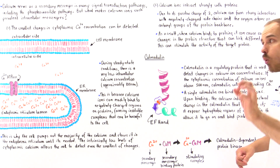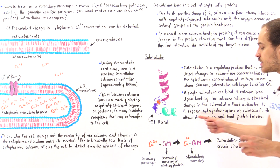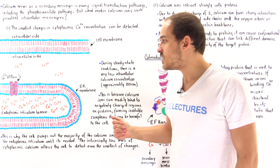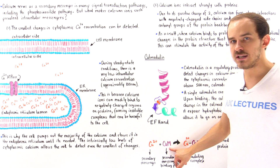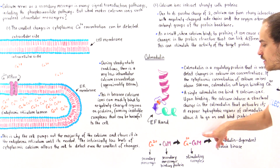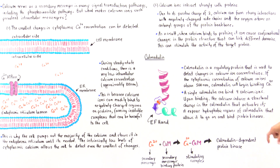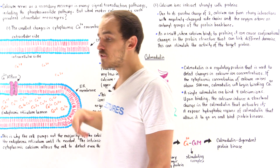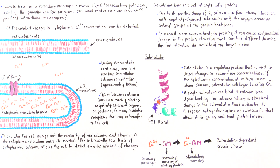One important molecule that calmodulin binds to is the calmodulin-dependent protein kinase, which depends on the calcium-calmodulin complex. So calcium, acting as a secondary messenger, is released from the ER lumen into the cytoplasm, where it binds onto calmodulin and forms the calcium-calmodulin complex. This stimulating complex then goes on and binds the calmodulin-dependent protein kinase, which is activated and then goes on to phosphorylate many different types of enzymes, stimulating many different types of pathways.